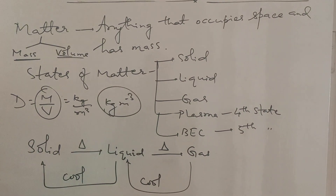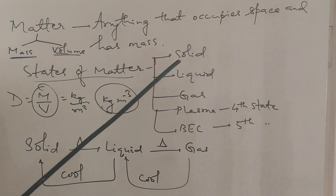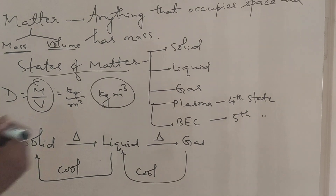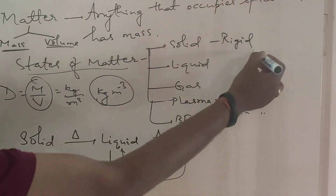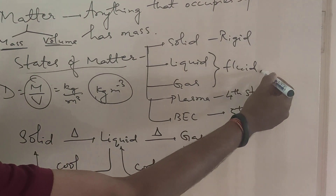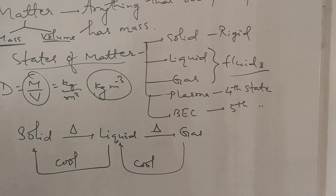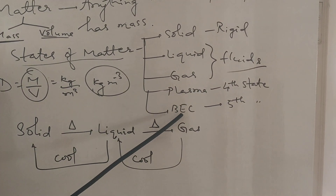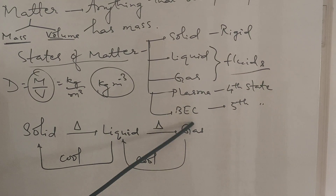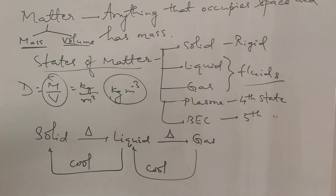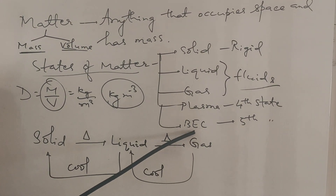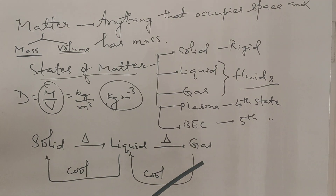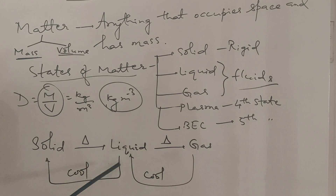There are five different states of matter: solid, liquid, gas, plasma, and Bose-Einstein condensate. Solids are rigid, while liquids and gases can flow, so they are called fluids. Plasma is the fourth state and exists at very high temperatures, like in the core of stars. Bose-Einstein condensate is the fifth state and exists at sub-zero temperatures, where atoms behave abnormally. When a solid is heated it forms liquid; liquid when heated forms gas; gas when cooled forms liquid; liquid when cooled forms solid.